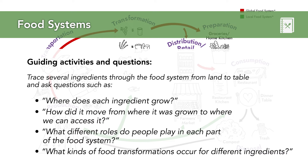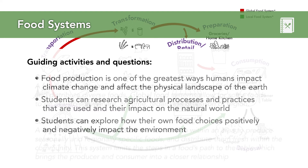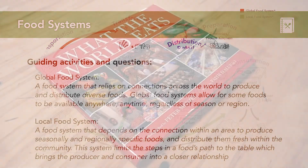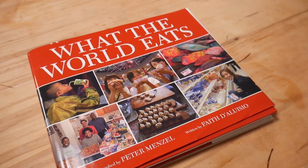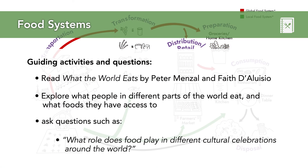For example: wheat to flour, raw milk to cheese and yogurt, berries to jam. Food production is one of the biggest ways humans impact climate change and affect the physical landscape of the earth. Students can research agricultural processes and practices used throughout the world and their impacts on the natural world. Students can explore how their own food choices positively and negatively impact the environment, and explore differences between local and global food systems as well as communities that rely on each of these. Remember to consider the diversity of food systems and how this might look different from region to region. Using the book Hungry Planet: What the World Eats by Peter Menzel, you can explore what people from different parts of the world eat, what foods they have access to, and how that shapes their lives.